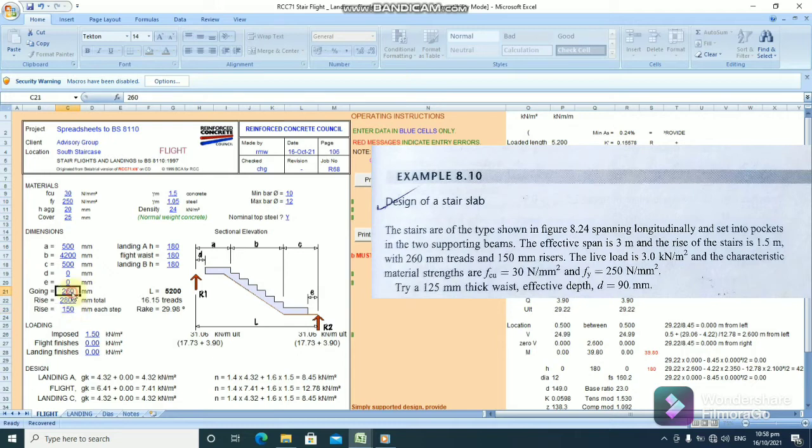Now, the waist. Waist is 125. The flight waist is 125 mm. And, let's say the landing. Let's keep the landing at 150 mm.